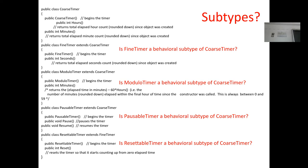Is FineTimer a legitimate subtype? A student says yes, because we're not overriding the previous behavior — the functionality is the same as CourseTimer. Right, there's no problem here. It doesn't change the behavior of a FineTimer in any way someone would find surprising. Someone treating a FineTimer as if it were a CourseTimer won't be surprised at all — they can call minutes as expected and won't even know about the seconds method. So no problem here — perfectly legitimate.